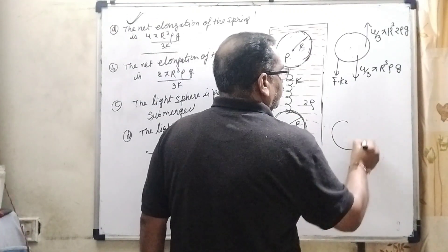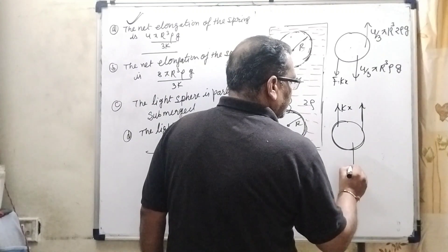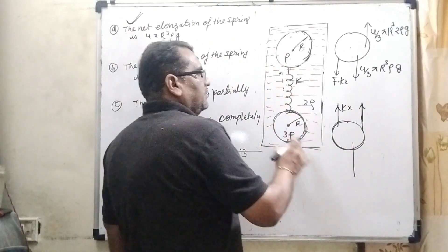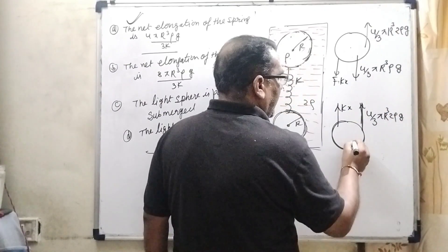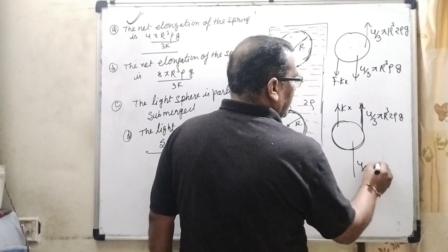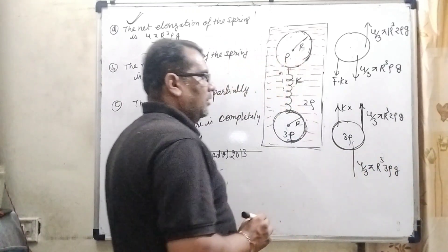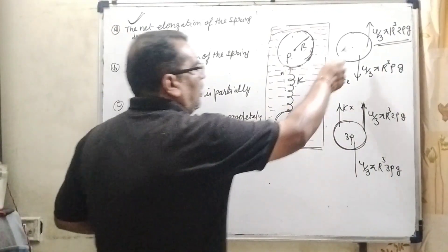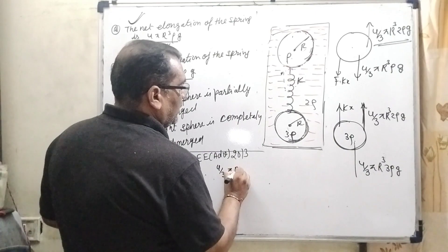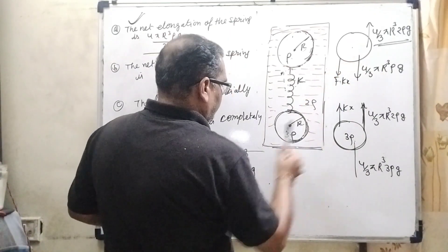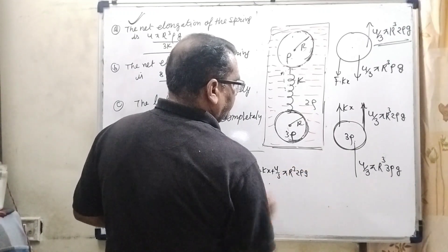For the lower sphere: spring force Kx acts upward, buoyancy force (4/3)πR³(2ρ)g acts upward, and the weight of this sphere (4/3)πR³(3ρ)g acts downward. Now summing all upward forces: (4/3)πR³(2ρ)g + Kx + (4/3)πR³(2ρ)g.